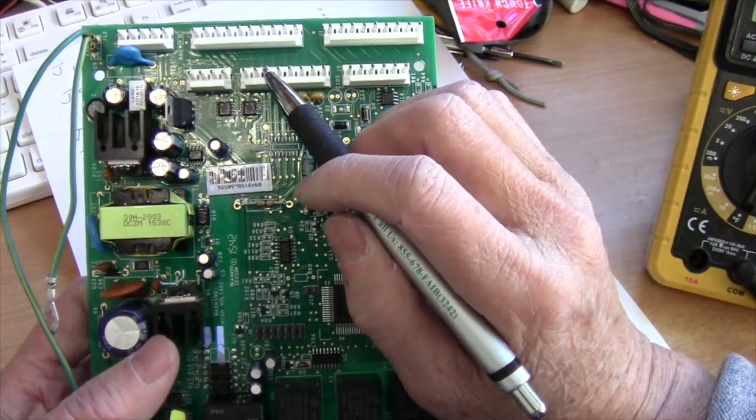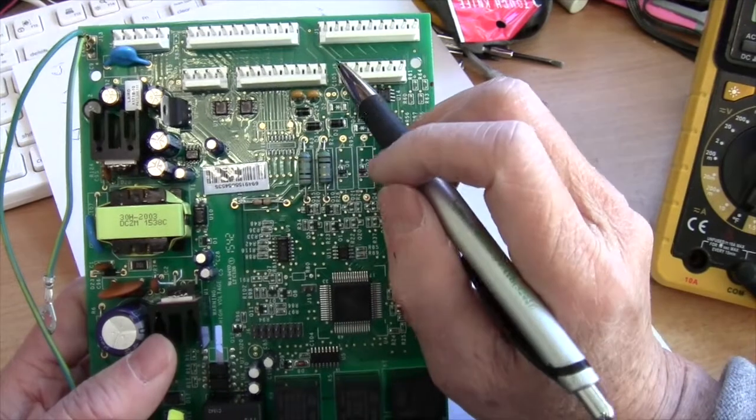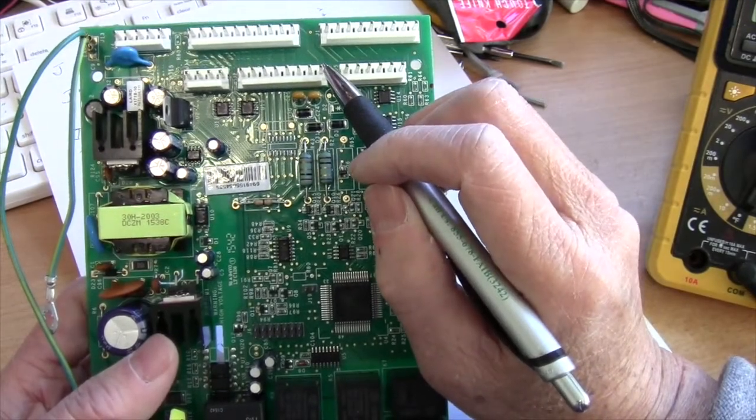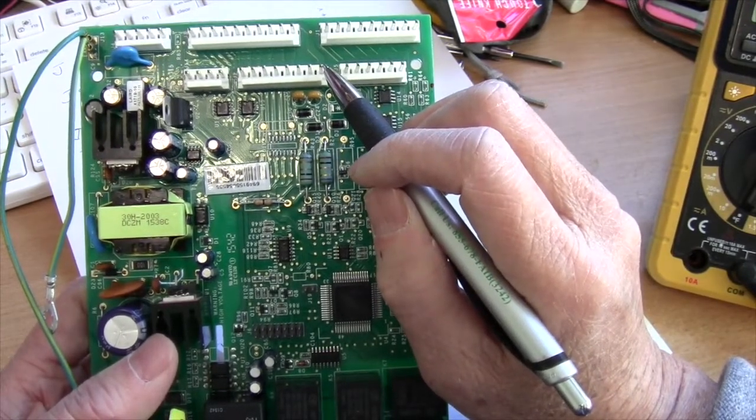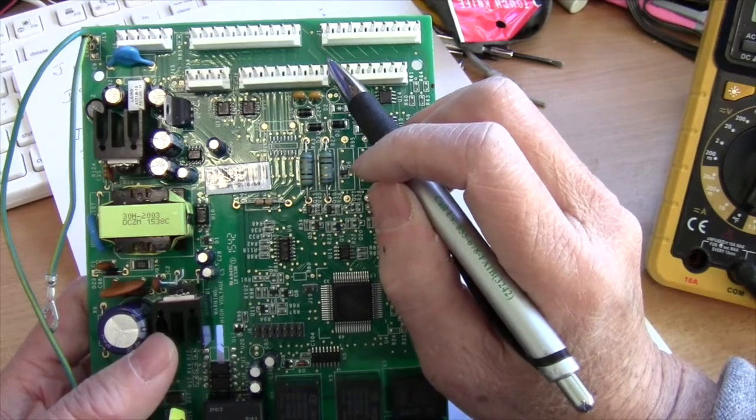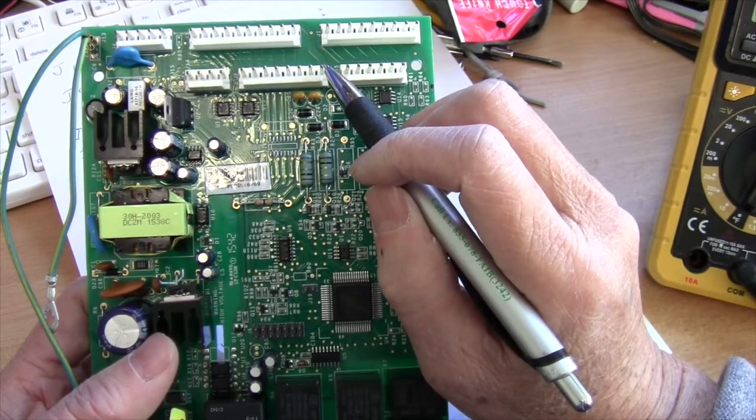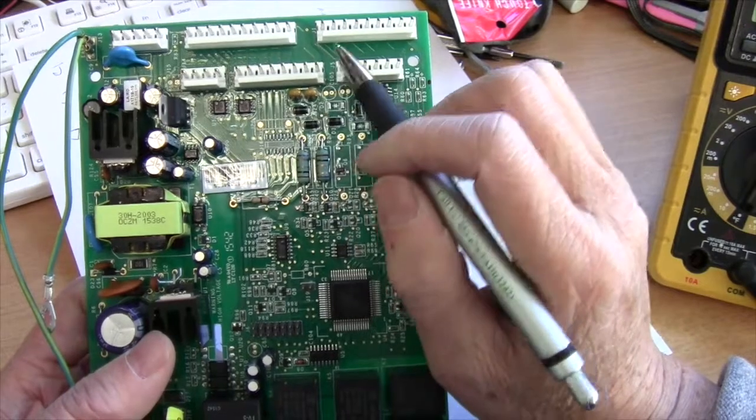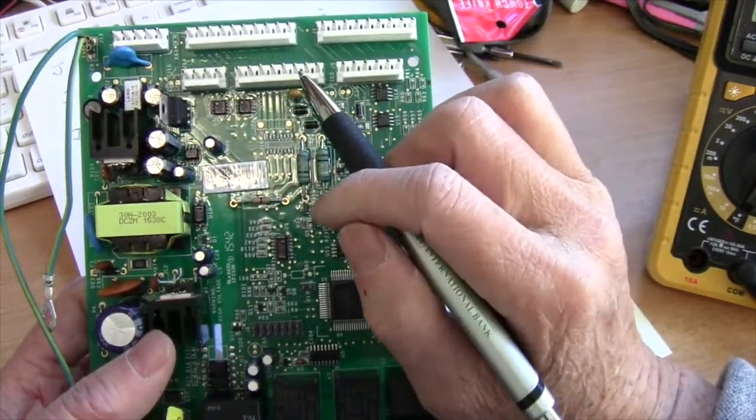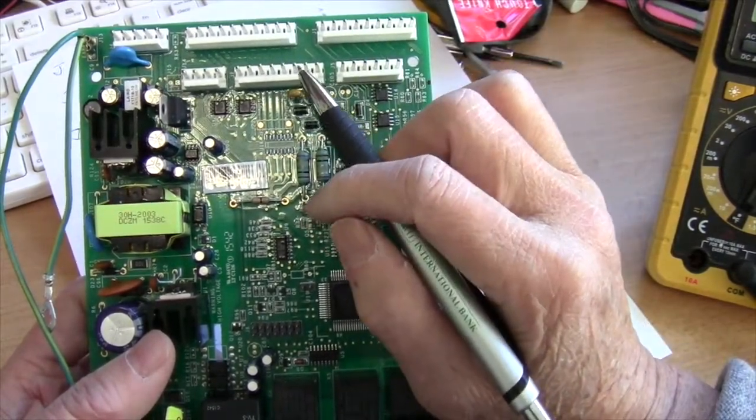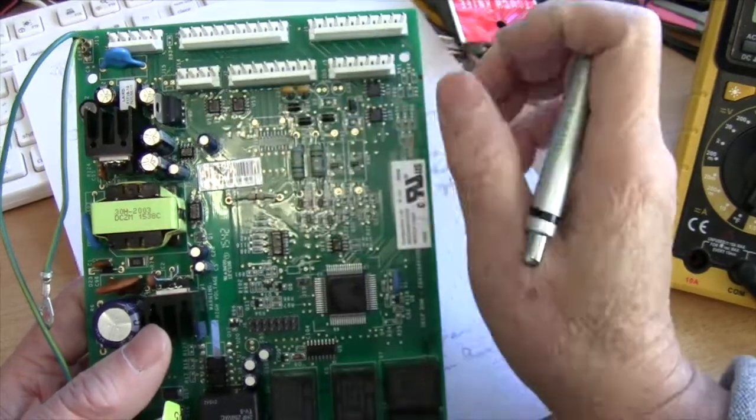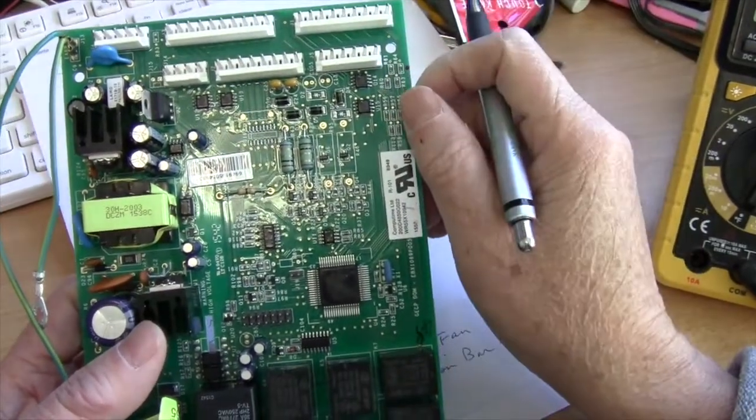And between pin three and eight is the fan supply voltage. When mine is operating, it's about 13.4, 13.5 volts. If you don't get those voltages, then your board is not good. And you have to replace the board.